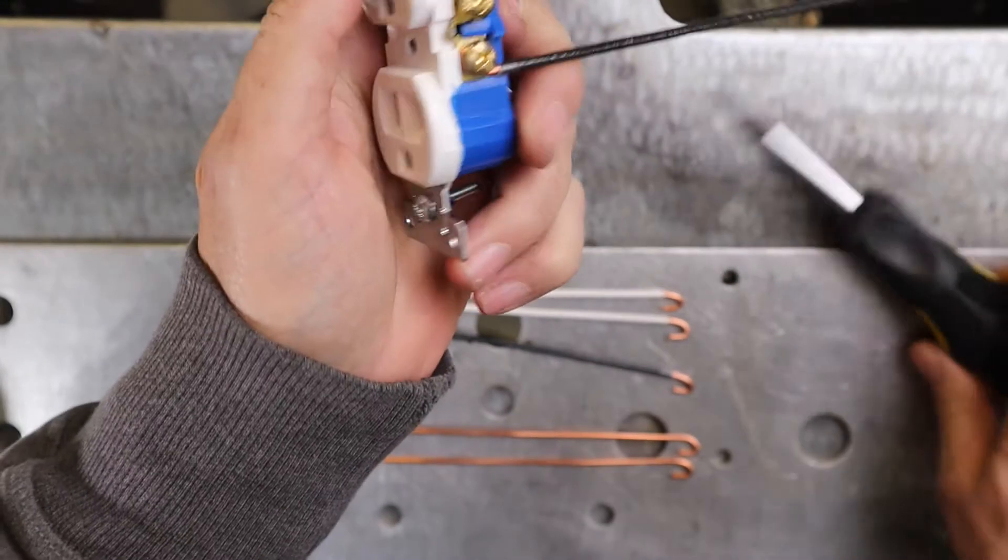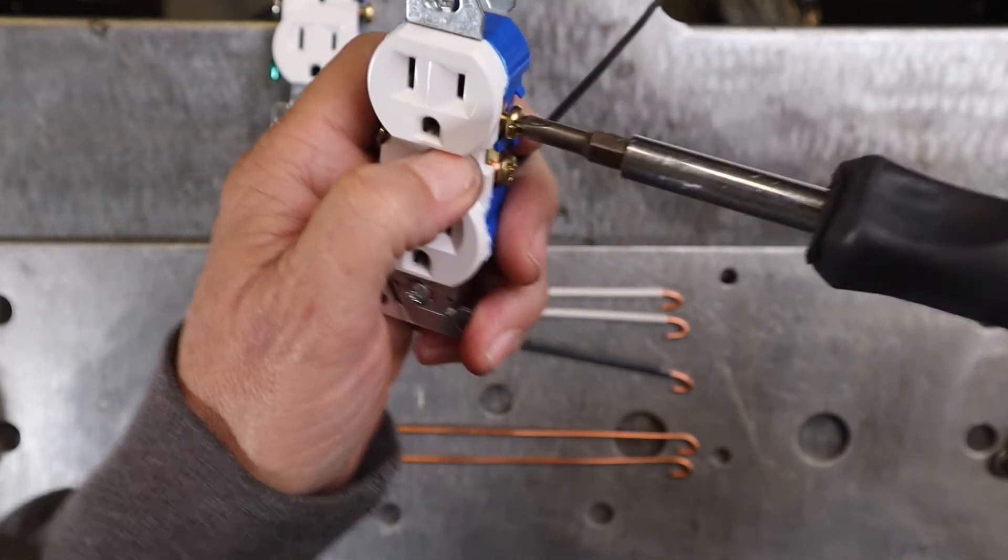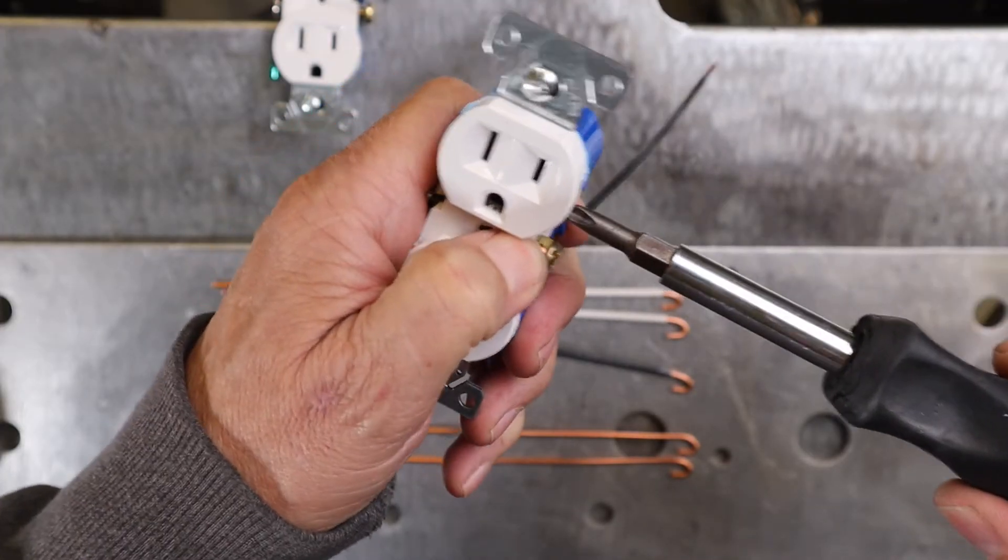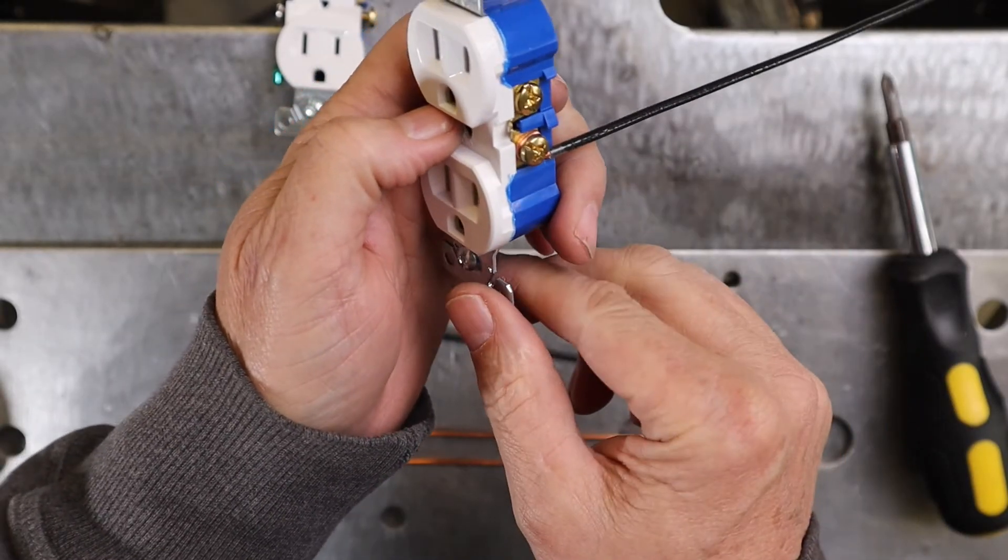This is important. Snug it down, and then if you're not going to use the other screw, you should probably just turn it in. That way it's not sticking out, and there's the least chance for it to get hung up or shorted out on something inside the box.